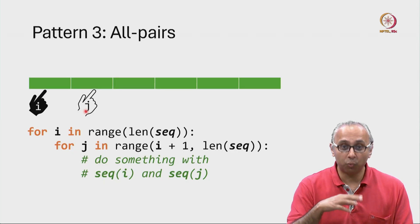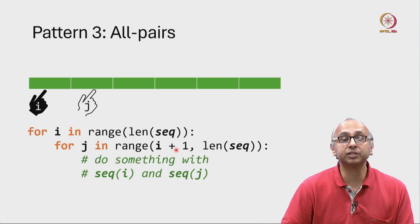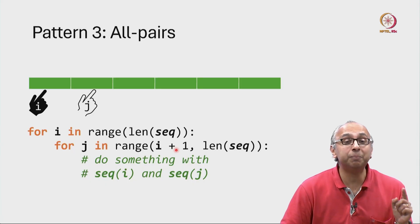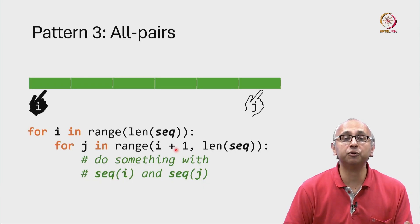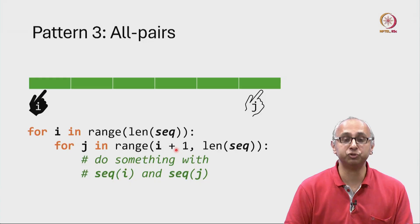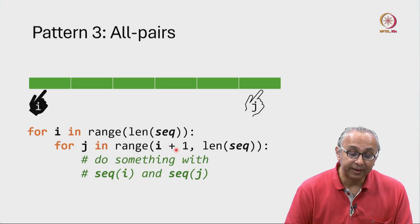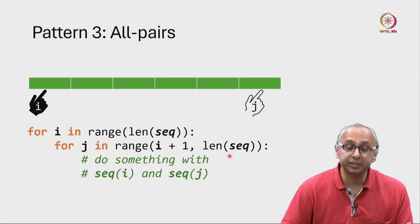And then what is going on is I am moving this J-finger while keeping the I-finger fixed. So it looks like this. For that value of I, look at all future values of J. And then after you have examined all the values of J, only after this is done,